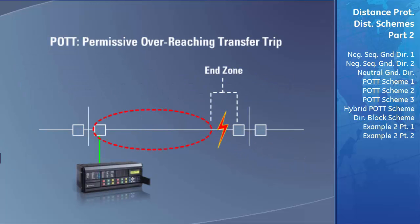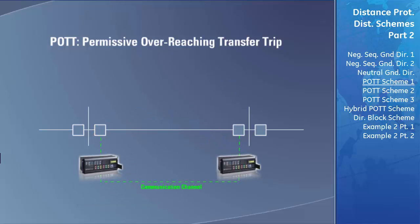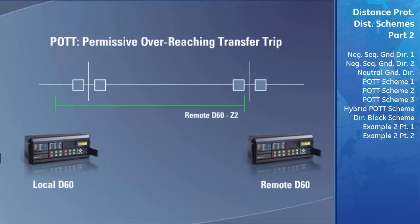The POTT pilot-aided scheme stands for the permissive overreaching transfer trip scheme, and like all other pilot-aided schemes, is used to speed up the clearing of faults that occur in the end zone of a transmission line. A communication channel must be provided between the two relays at each end of the transmission line. In the POTT scheme, the remote D60 speeds up the tripping of an end zone fault by sending a permission to trip key under two circumstances: when it detects a fault within its overreaching zone 2, or as an optional feature, when it detects that ground current is flowing in its forward direction.